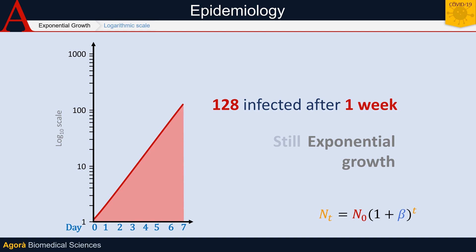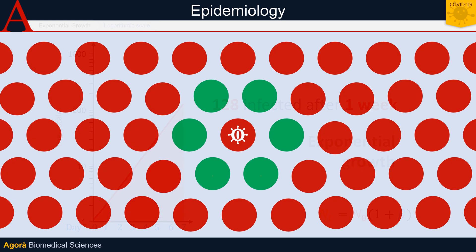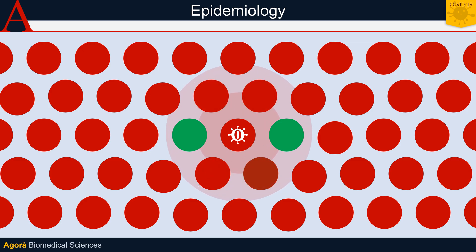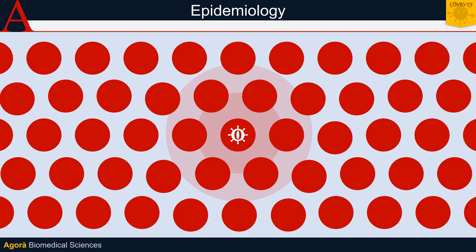In a logarithmic scale, the spread of the infection seems to have a linear trend, because the logarithm is exactly the inverse function of the exponential — the function that drives the increase of infections. Things may seem to go straight, but they might already be out of control. The number of infections, however, cannot grow forever. Sooner or later, there will be no one left to infect, and the spread will finally stop.